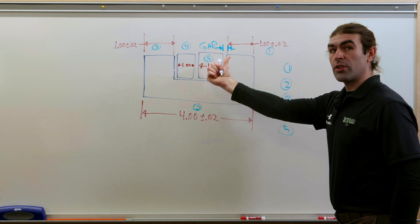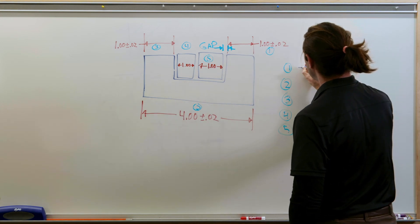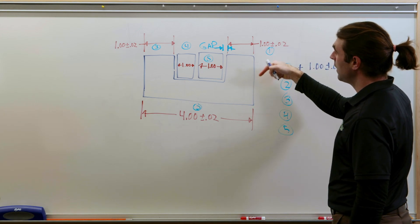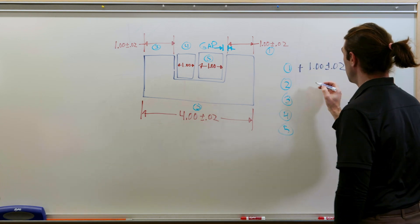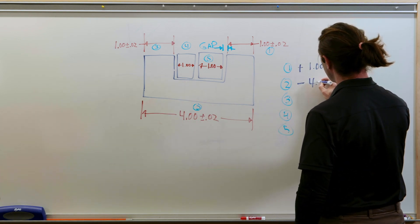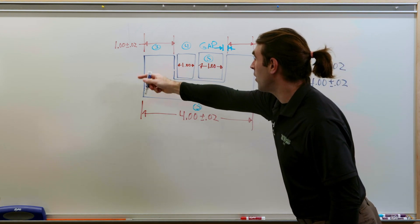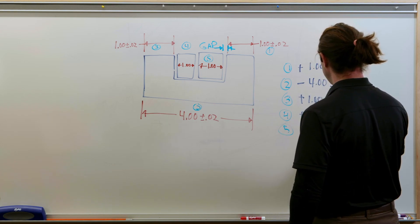Dimension one, since we're going to the right, we'll call that positive. So we're going to say plus one inch plus or minus 20 thousandths. Now we're going to go to the left. We'll call that negative. So minus four inches plus or minus 20 thousandths. Back across to the right.